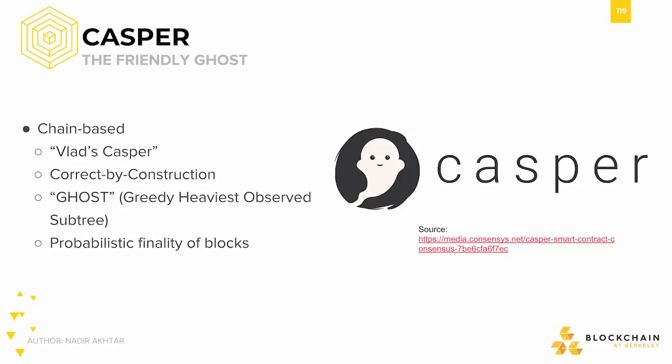On the other hand, Casper the Friendly Ghost is colloquially known as Vlad's Casper, named after Vlad Zamfir, a cryptography researcher. As mentioned before, it is designed from the ground up with a correct-by-construction, or CBC, methodology, so it would be a more drastic overhaul to the Ethereum network, aiming to redefine the fundamentals of the protocol. CBC Casper is a family of protocols that allow consensus on different types of data, but all satisfy the same safety proof. Currently there are six consensus protocols in the CBC family, serving purposes ranging from binary and ordinal consensus to list and concurrent schedule consensus and blockchain consensus. Instead of aiming for probabilistic finality, CBC Casper aims for absolute finality.